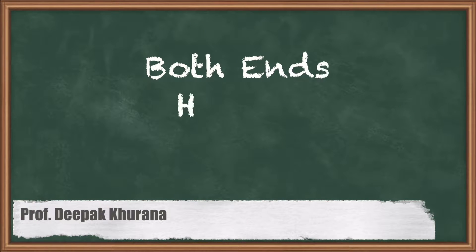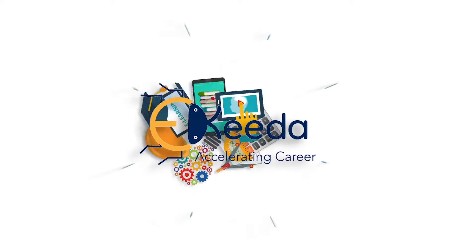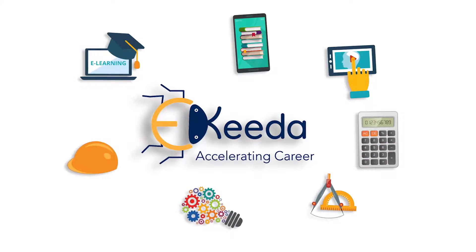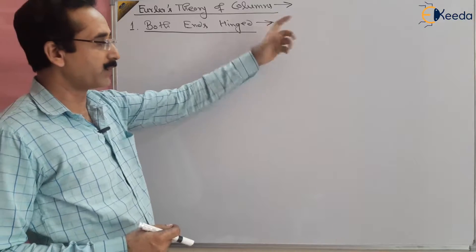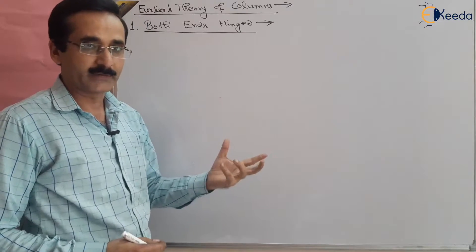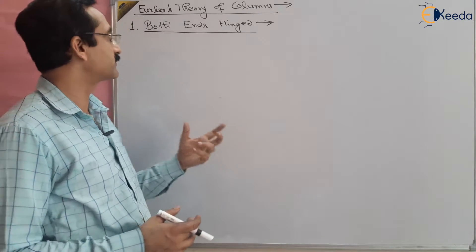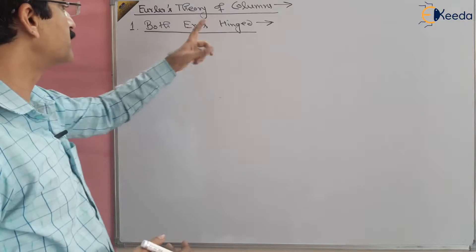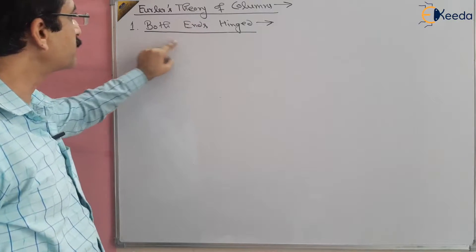Hello students. In this session we are going to study Euler's theory of column, both ends hinged. We are going to derive Euler's load — basically what is the theory and what is the safe load given by Euler's theory — and we are taking the case both ends hinged.